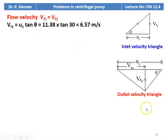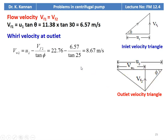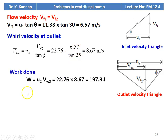Looking at the outlet velocity triangle: U2 is the peripheral speed at the outlet, VW2 is the tangential velocity, VF2 is the flow velocity, and phi is the blade angle at the outlet. VW2 from the velocity triangle equals U2 minus VF2 divided by tan phi, which is 22.76 minus 6.57 divided by tan 25 equal to 8.67 meters per second. The work done W equal to U2 times VW2: 22.76 into 8.67 equal to 197.3 joules per kg.